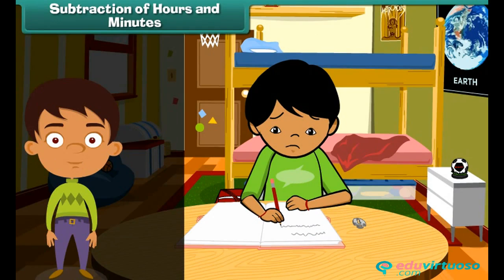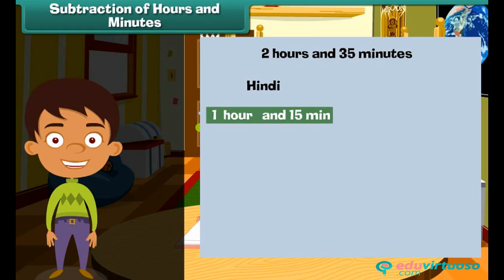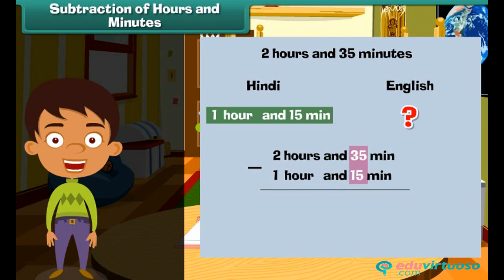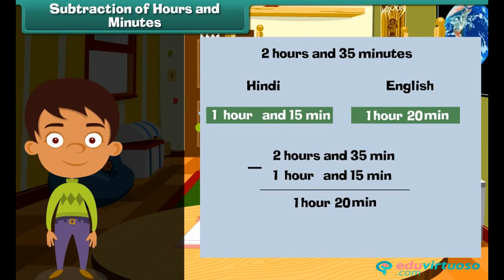Subtraction of hours and minutes. Ladika completed her English and Hindi homework in 2 hours and 35 minutes. Hindi homework was over in 1 hour 15 minutes. To find the time for English homework, subtract the time for Hindi from the total. First subtract the minutes: 35 minus 15 is 20 minutes. Then subtract the hours: 2 minus 1 is 1 hour. So Ladika took 1 hour and 20 minutes to complete her English homework.